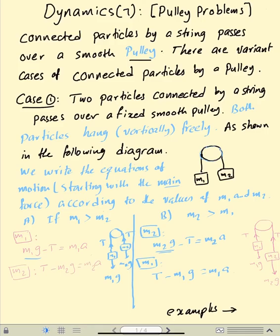We are today on pulley problems — particles connected by a string passing over a smooth pulley. The pulley is wheel-shaped and carries two particles. We have variant cases of motion by a pulley. In the first case, we have a fixed smooth pulley with two particles hanging freely and vertically. According to the mass of the particles, we write the equations of motion.